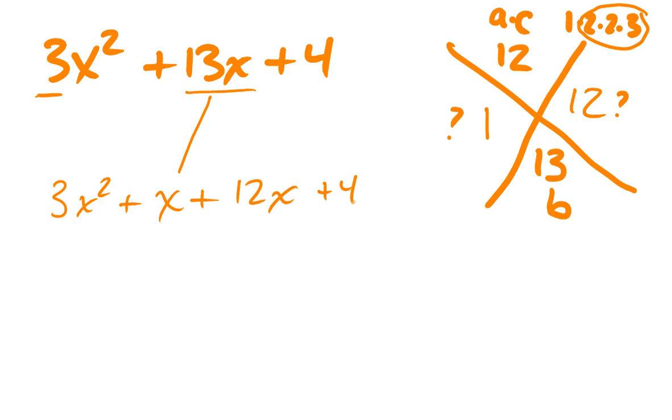What we do now is we're going to look at the first two terms and factor out their greatest common factor, and then look at the second two terms and factor out their GCF. What's the GCF of my first two terms? X. And when I factor out the x, what am I left with? 3x plus 1. Yeah. What's the GCF of my second two terms? 4. And what do I have once I factor that out? 3x plus 1. Great.